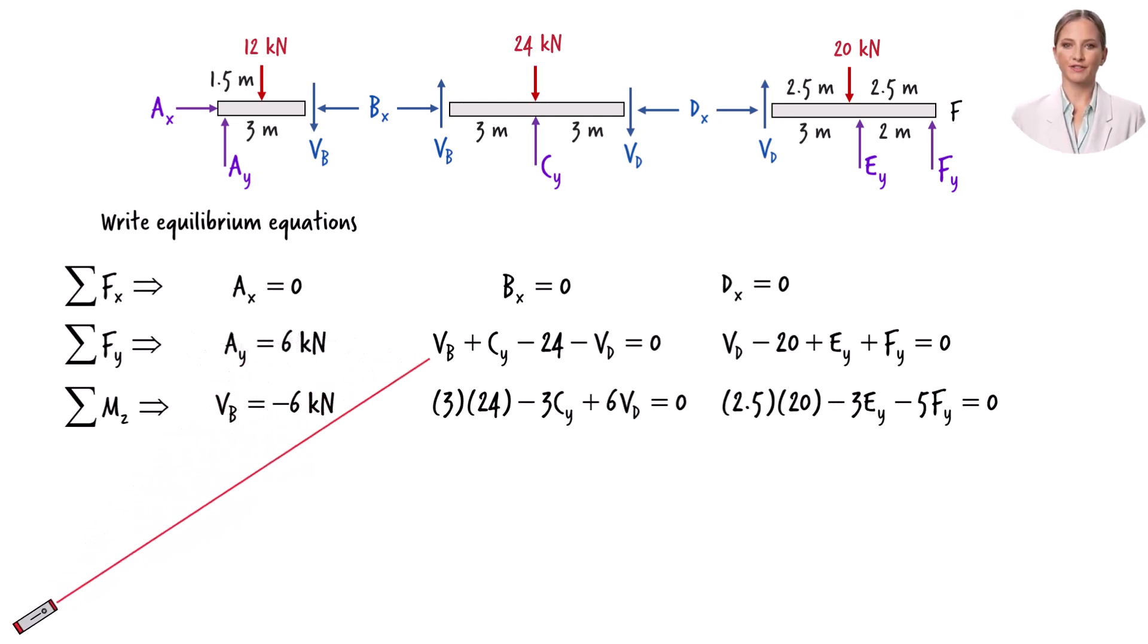Knowing Vb, this equation simplifies. Since these two equations are expressed in terms of Cy and Vd, we can simplify them and then solve them simultaneously for the two unknowns.